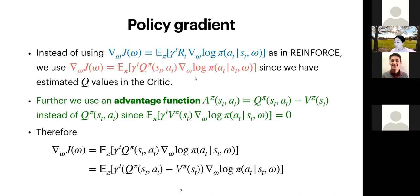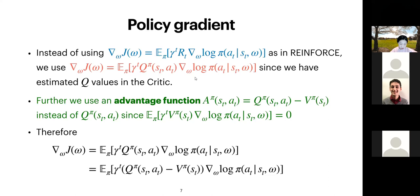This is a very important technique used widely in reinforcement learning: using the advantage function and exploiting the fact that the expectation of the value function times the gradient of log pi is zero. This fact makes it a powerful variance reduction trick.